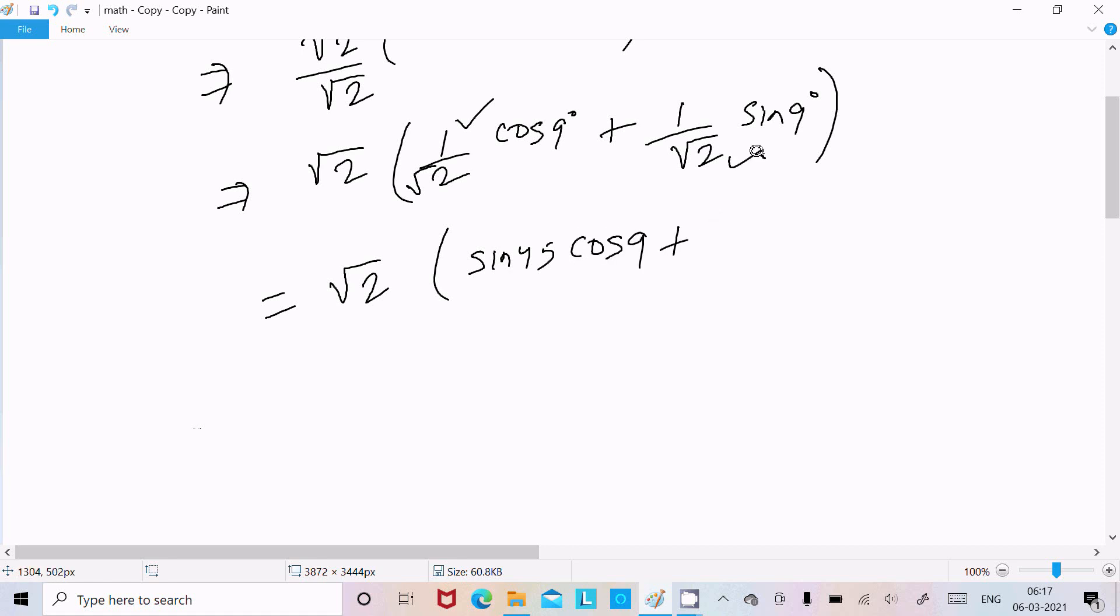And this one we can write cos 45 and here sin 9°. So you already know sin A cos B + cos A sin B, the formula called sin(A + B).